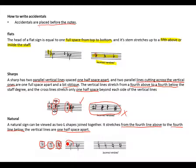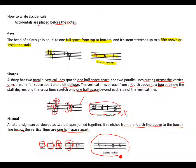As you can see, the complete natural sign shows the L-shapes stretching from the fourth line above to the fourth space below. These are incorrect versions of how to draw the natural sign. Hope you understand.